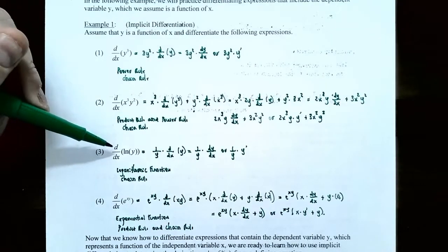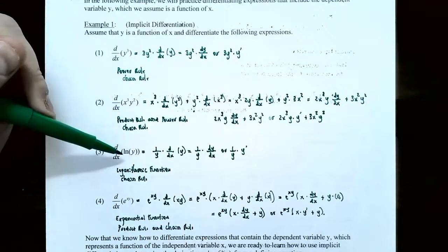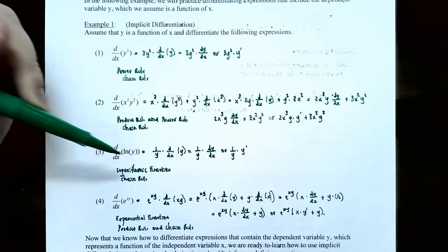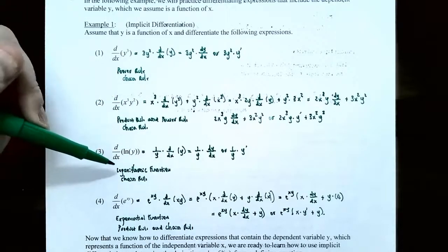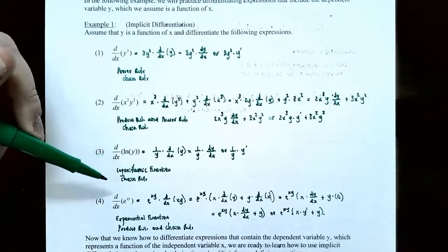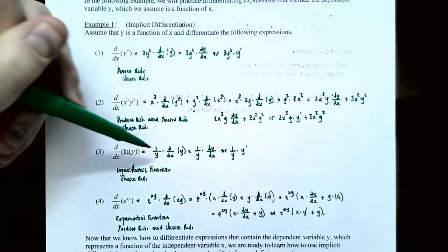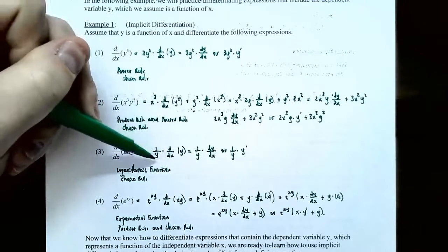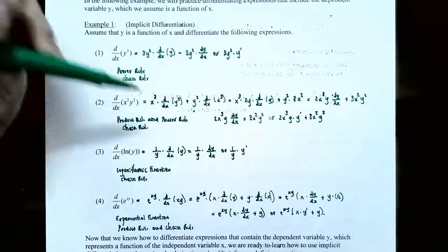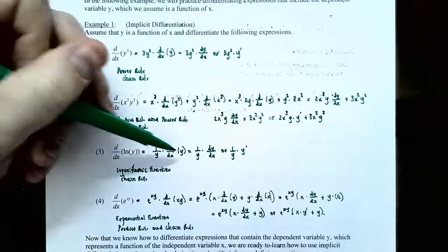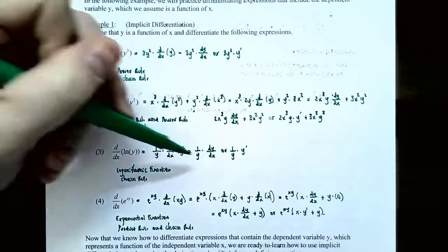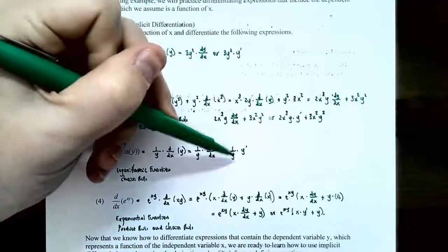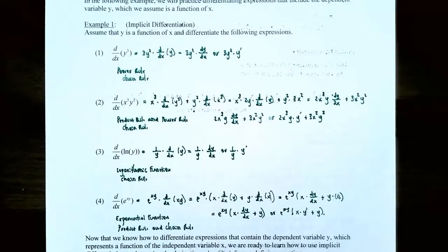Number three: take the derivative with respect to x of natural log of y. This is a composite function because natural log is the outside function and y is the inside function. Take the derivative of the logarithmic function and also use the chain rule. The derivative of natural log of y is 1 over y times the derivative of the inside function, so 1 divided by y times dy/dx — or using prime notation, 1 divided by y times y prime.